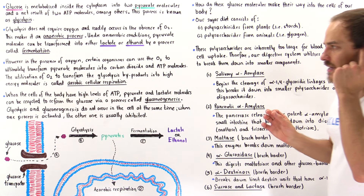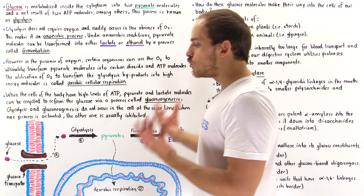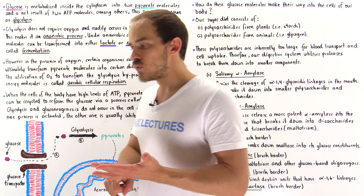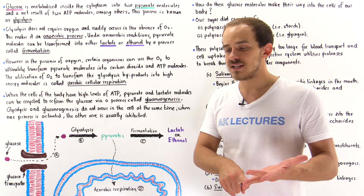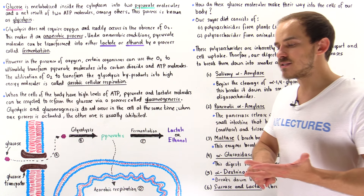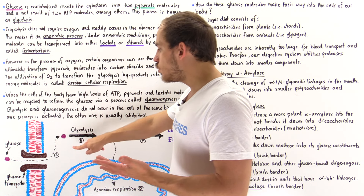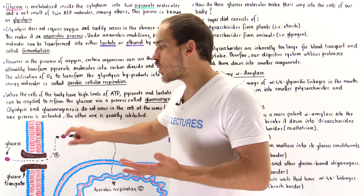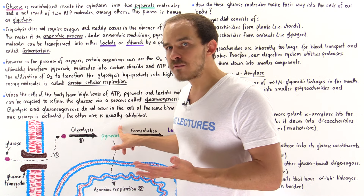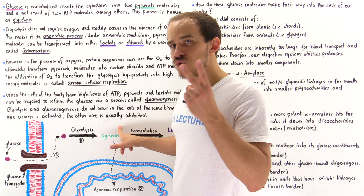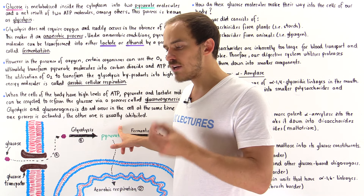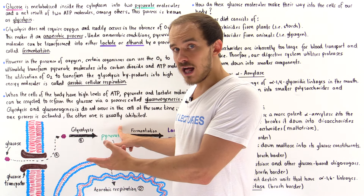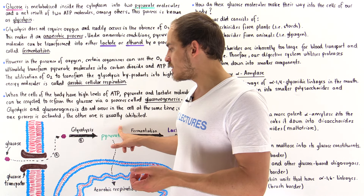What types of processes make up glucose metabolism? The first process is glycolysis, which is the process by which glucose molecules present in the cytoplasm are broken down into pyruvate molecules — specifically two pyruvate molecules — with a net result of two ATP molecules, which can be used by the cell to carry out some type of process.